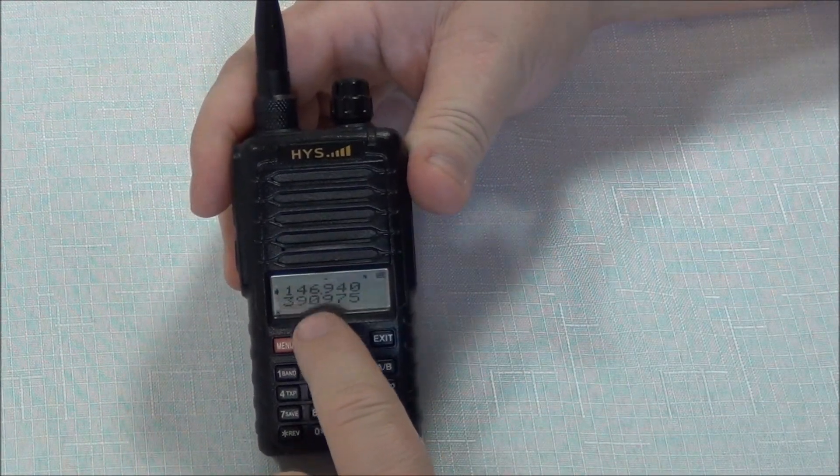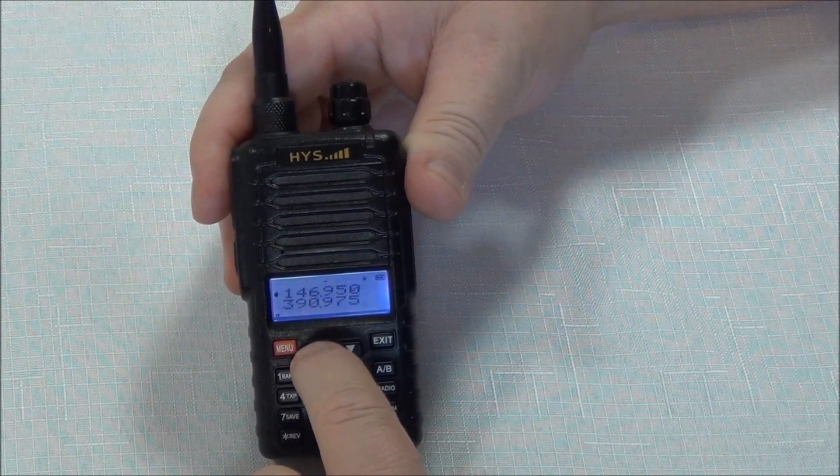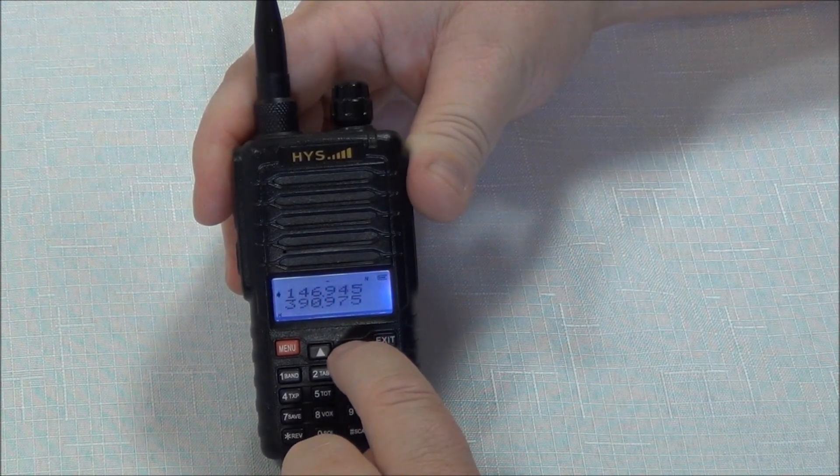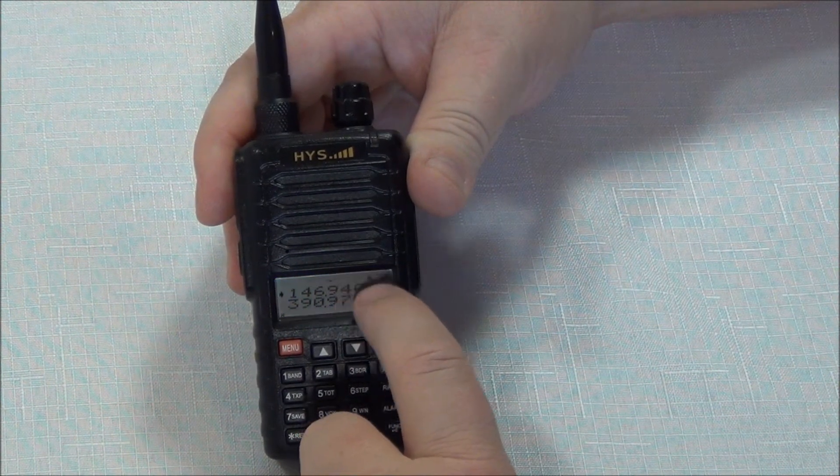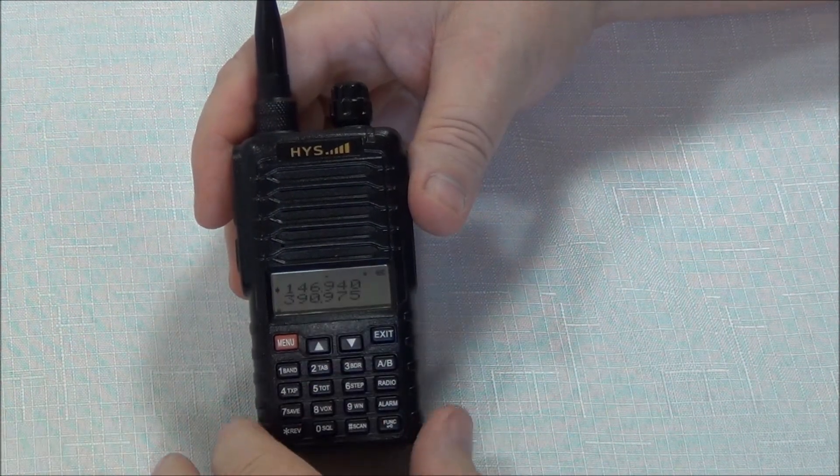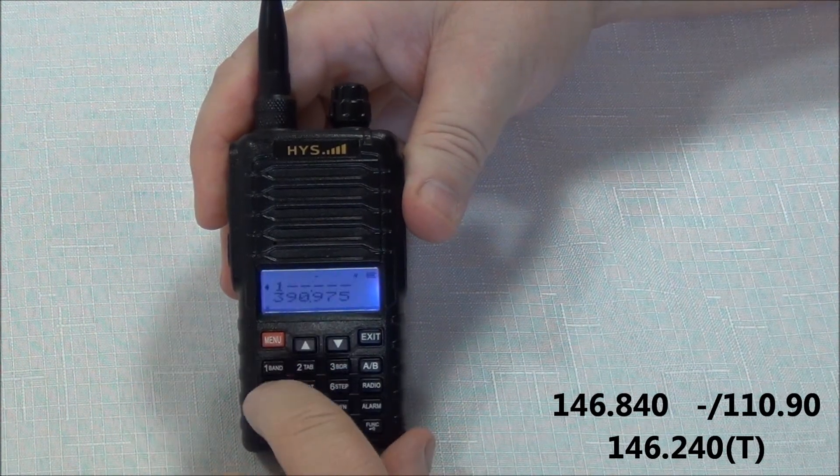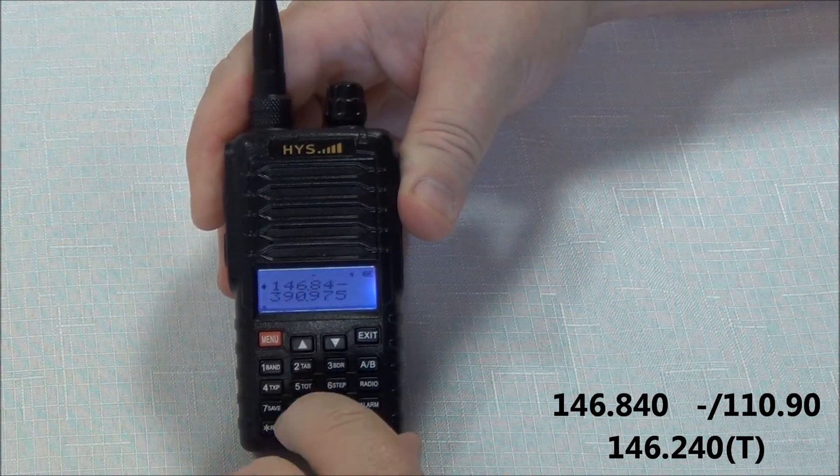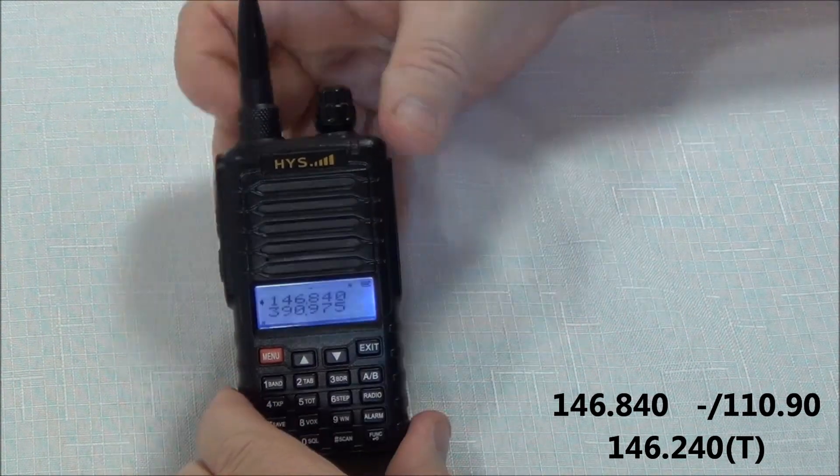See, we're right now at 146.940. And if I click up, there's 45, 50, 55, 60, 55, 50, 45, 40. You're actually changing how many steps these numbers graduate in. Okay, so the frequency I'm going to program in today for my kilocycle repeater is the 146.840. Okay, there we are at 146.840. It looks like there was some noise coming in there.